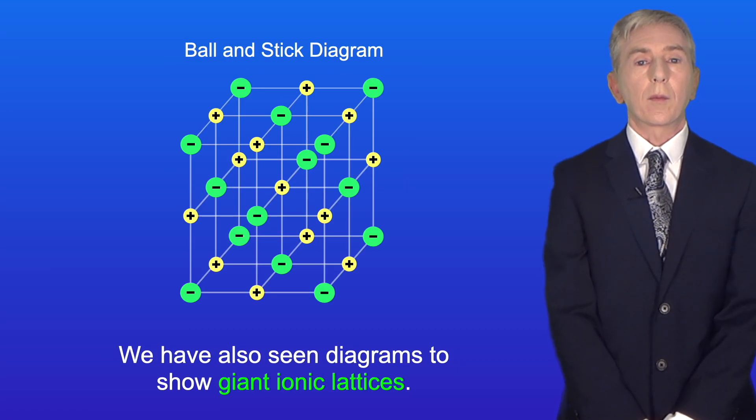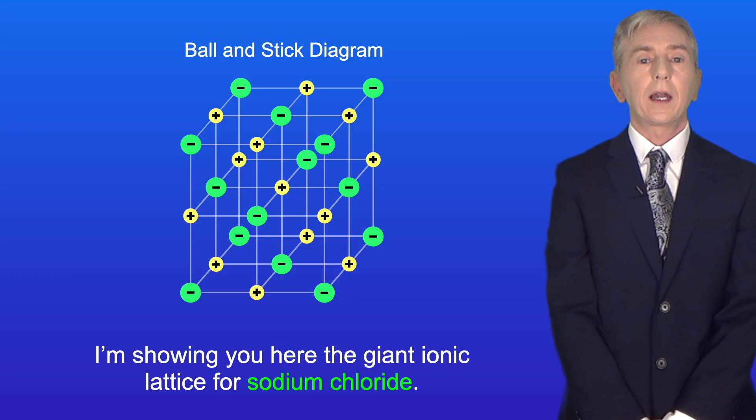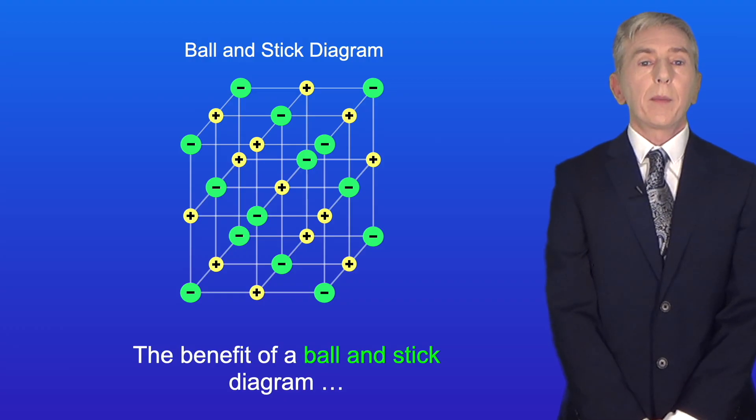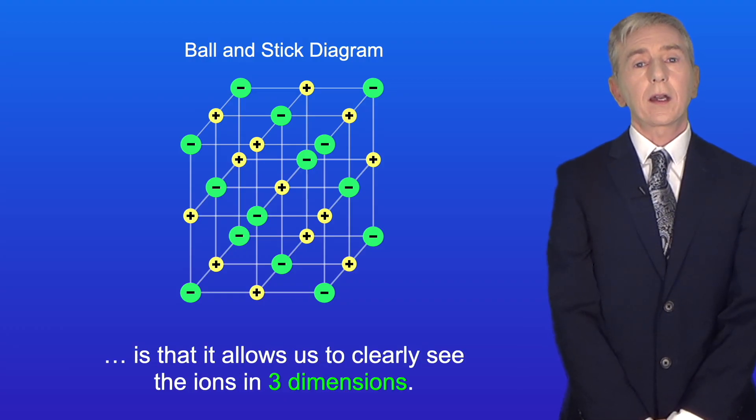Okay now we've also seen diagrams to show giant ionic lattices. I'm showing you here the giant ionic lattice for sodium chloride. This is called a ball and stick diagram. Now the benefit of a ball and stick diagram is that it allows us to clearly see the ions in three dimensions.